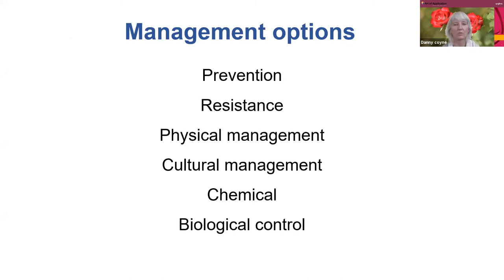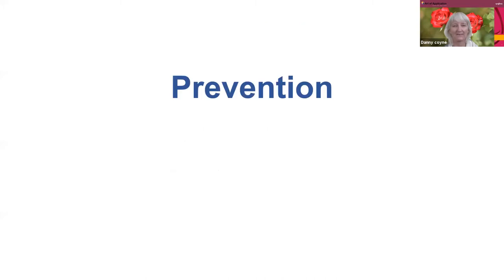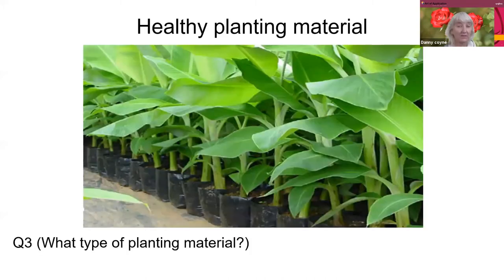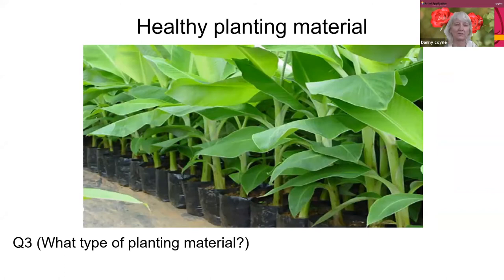The first option is prevention — you want to avoid getting nematodes into your crop. One of the first things is healthy planting material. You don't really want to bring in a diseased plant and start your crop with that — that'll be a disaster.